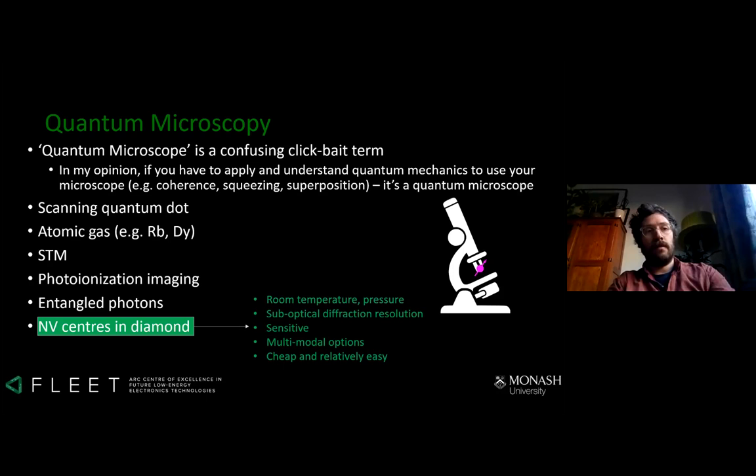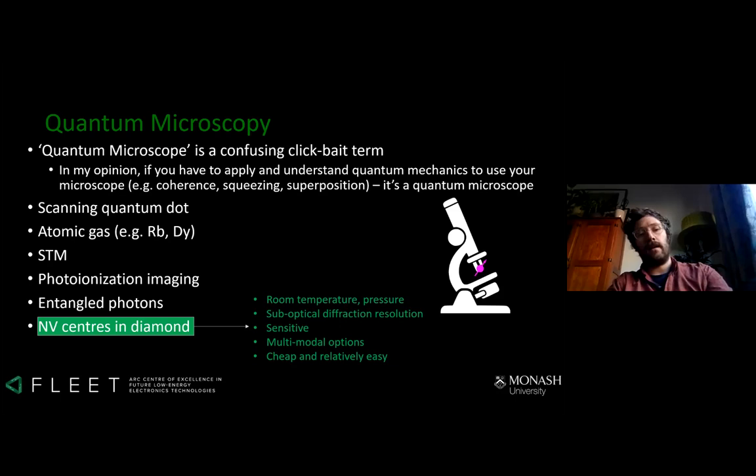The NV center in diamond is a pretty good option as a technology platform for microscopy for a few reasons. In particular, it works well at room temperature, you can get sub-optical diffraction resolution — potentially atomic-scale resolution — it's pretty sensitive to different types of fields such as electric or magnetic fields, and it's pretty cheap and easy to get started with.